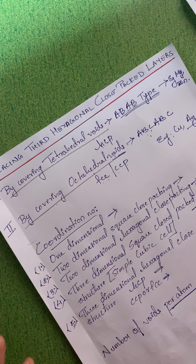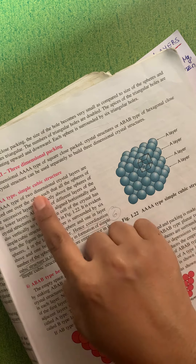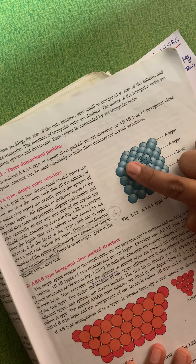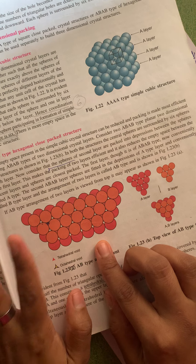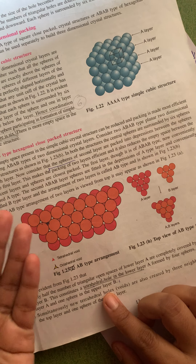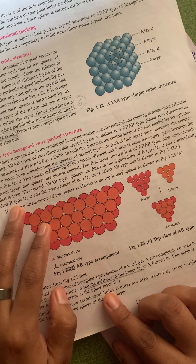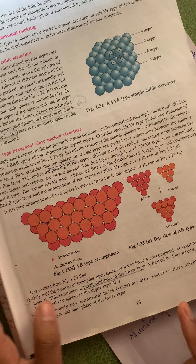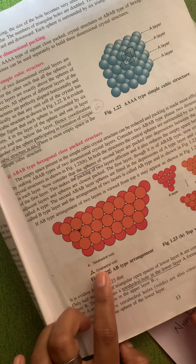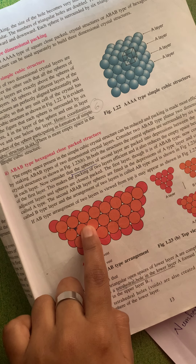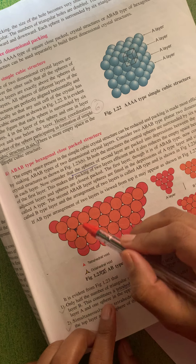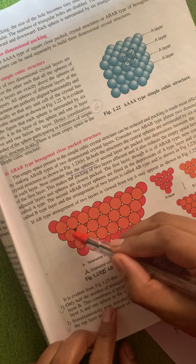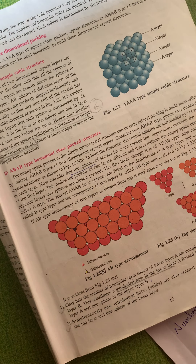Looking at the textbook picture: the AAA-type structure results from square close-packed layers. The ABAB-type hexagonal close-packed arrangement shows tetrahedral voids and octahedral voids clearly. The tetrahedral void is indicated, and the octahedral void — where three spheres are below and three spheres are above — can be seen: one, two, three below and one, two, three above.